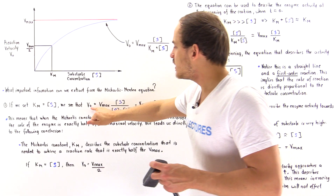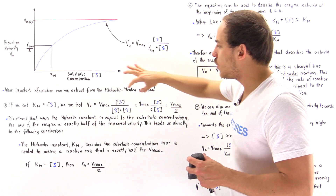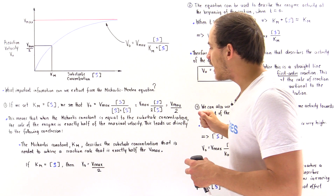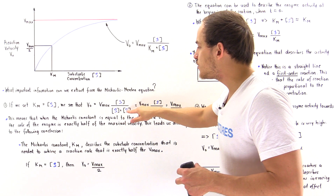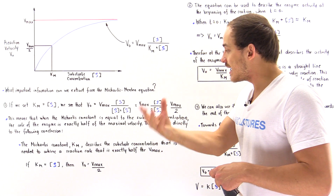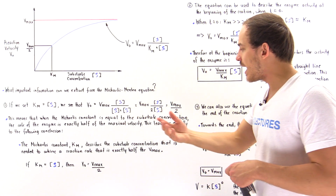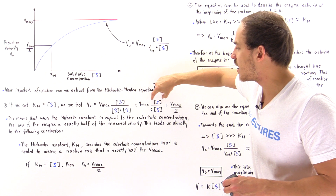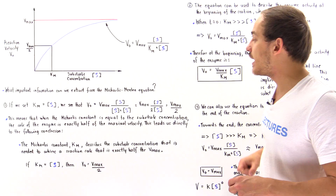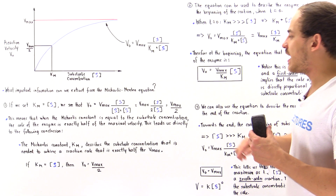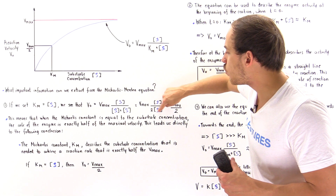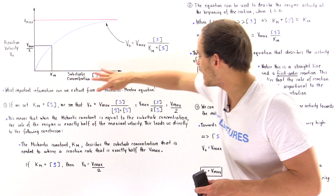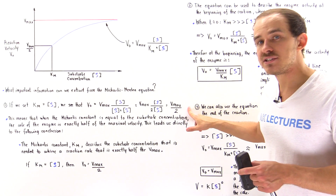If we set KM equal to the substrate concentration, then V0 is equal to Vmax multiplied by this ratio. The denominator simplifies from KM plus [S] to [S] plus [S], which is 2[S]. So we have Vmax multiplied by [S] divided by 2[S], and these two quantities cancel out.